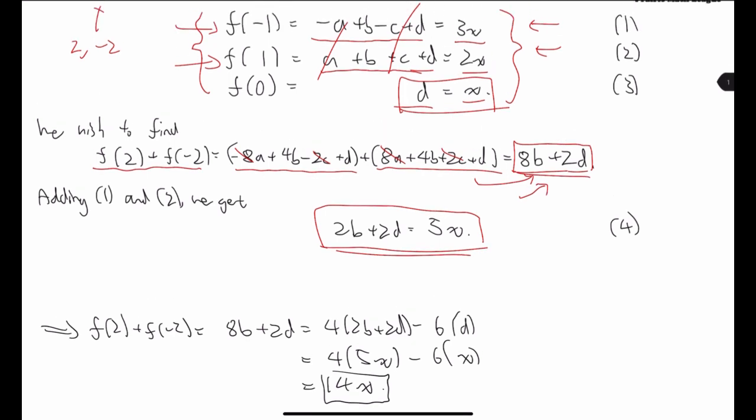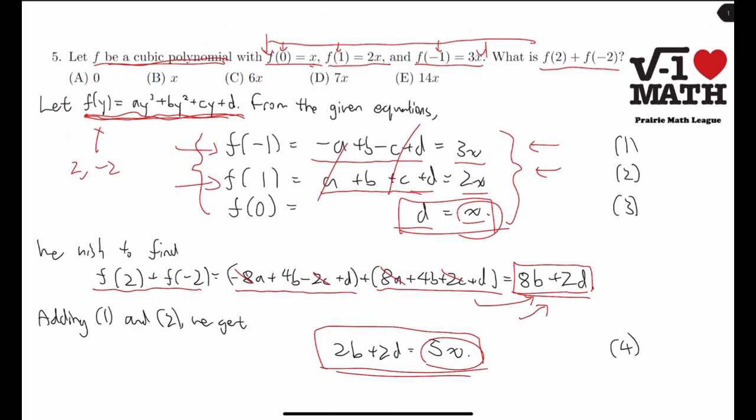And by now, we can just use these two equations to get to what we want here, which is 8b plus 2d is equal to 4 times 2b plus 2d minus 6 times d. And we see that that works. We can substitute to get 14x, which is option choice E.